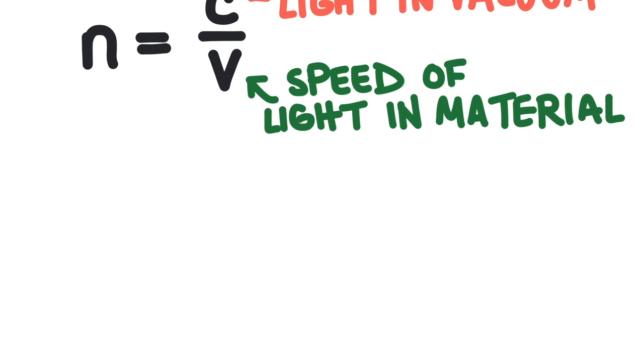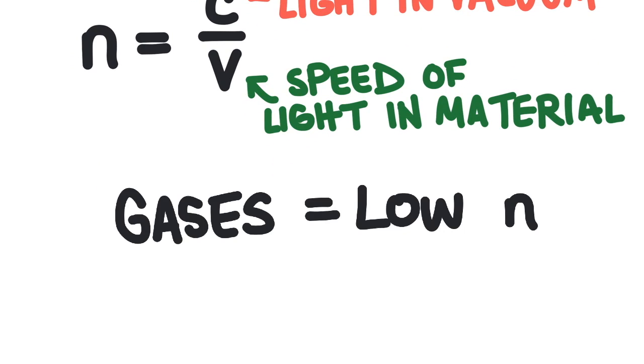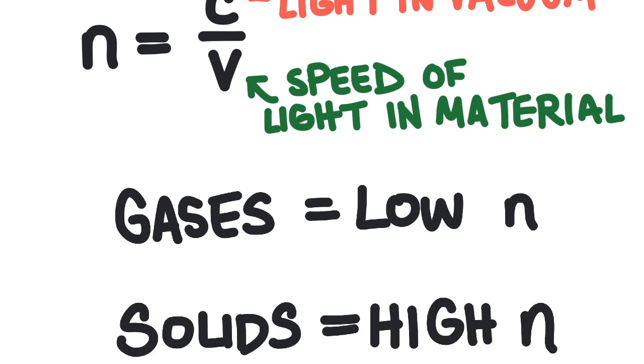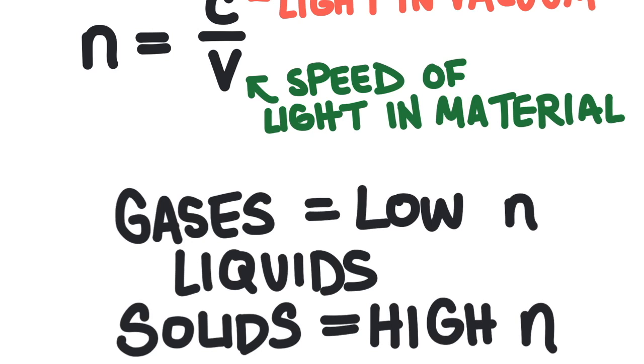Generally, gases have the lowest indices of refraction, they slow light the least, and solids have the highest indices of refraction, and liquids are kind of in between the solids and gases.